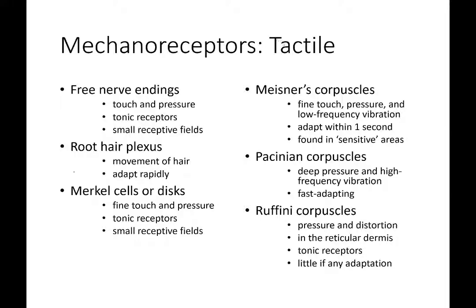Merkel cells and Meissner's corpuscles are both involved with fine touch within the skin. Pacinian corpuscles detect deep pressure, like someone squeezing your wrist. Ruffini corpuscles are associated with distortions — like someone grabbing your arm and twisting it — detecting different types of lateral movements on the skin.